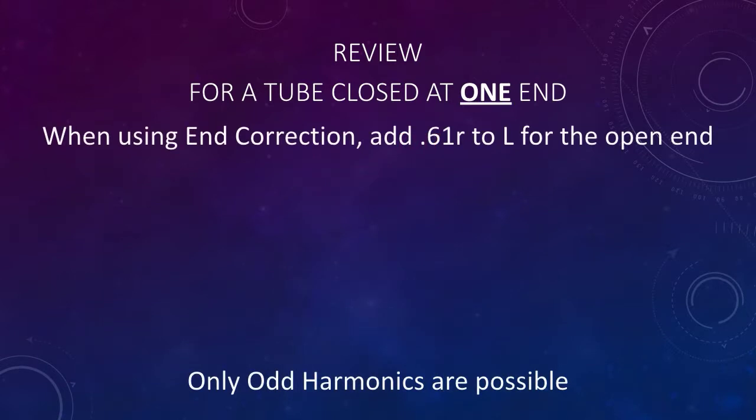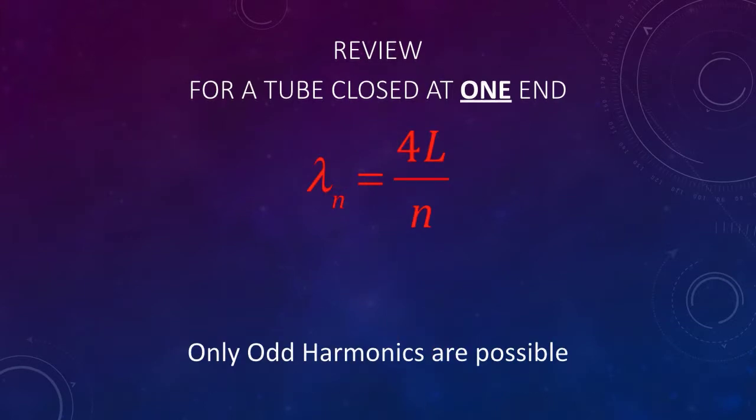When using end correction, add 0.61r to l for the open end, which gives us length with end correction is l plus 0.61r. The frequency of any harmonic, then, is nv over 4lec, and only odd harmonics are possible. The wavelength of any harmonic is 4l over n, the frequency of any harmonic is n times f1. Only odd harmonics are possible.